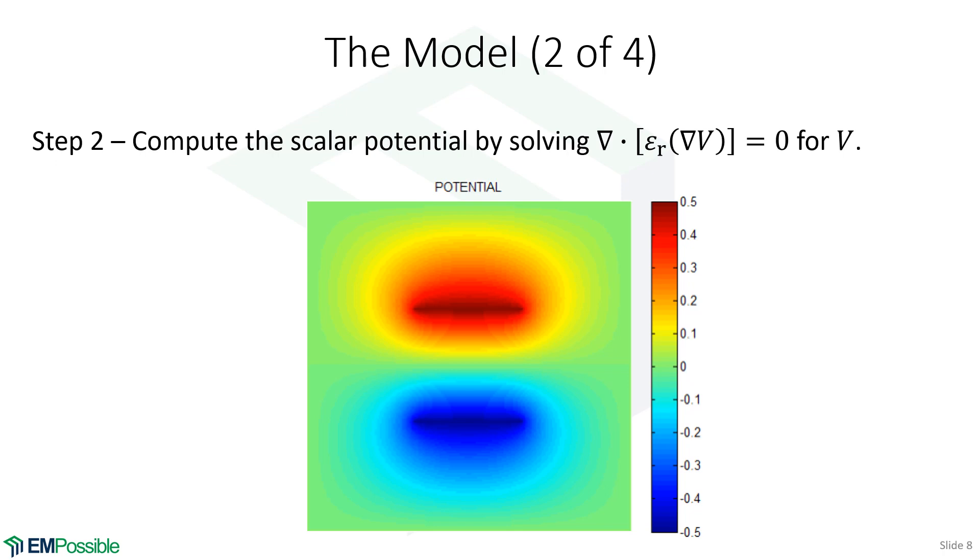Once I have that and I've developed a numerical algorithm, I want to solve this equation for the electric potential V. And when I do that, this is the answer that I would get. I can see the high potential on the top plate that I put at a half volt, the low potential on the bottom plate that I put at minus five volts, and you can see the potential everywhere in between.